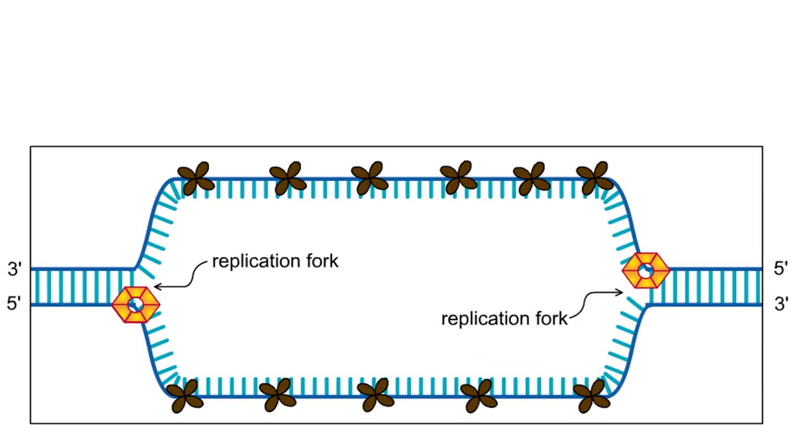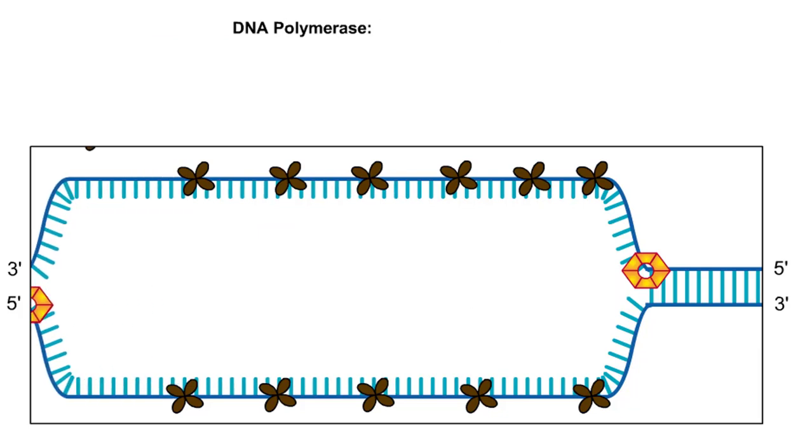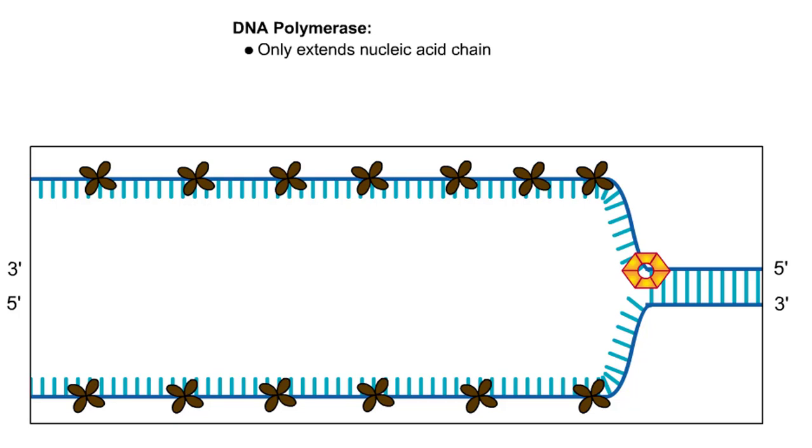Even when the strands are separated, however, DNA polymerase cannot simply begin copying the DNA. DNA polymerase can only extend a nucleic acid chain, but cannot start one from scratch.